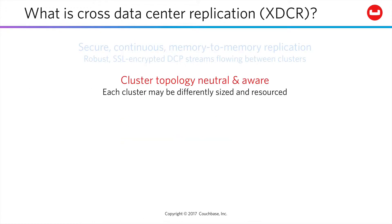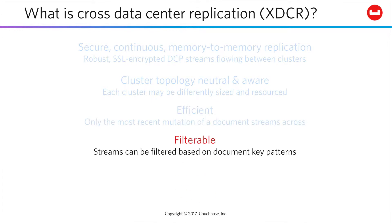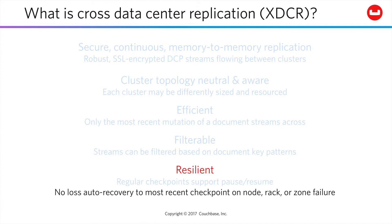XDCR is simple because it's neutral as to the cluster topology on each end of a replication — just target two buckets. It's efficient, as only the most recent mutation in a series streams across. It's also filterable, letting you configure pipelines to only allow certain document ID patterns to flow through. And it's resilient: because it uses DCP, you can pause, resume, and rewind to any checkpoint, ensuring no-loss auto-recovery to the most recent checkpoint on any node, rack, or zone failure.